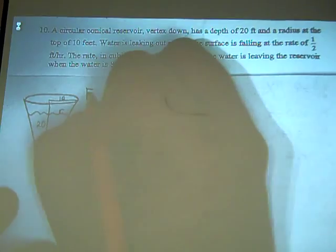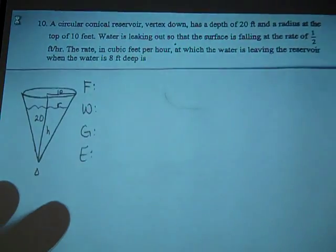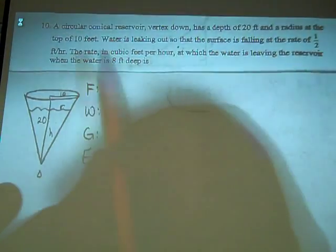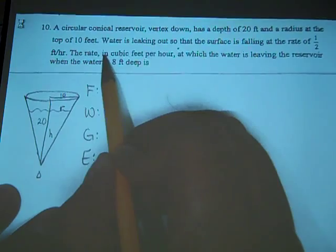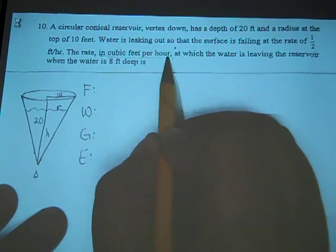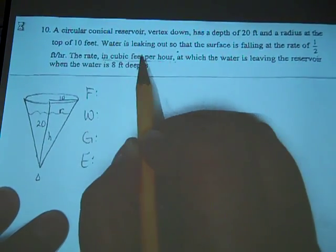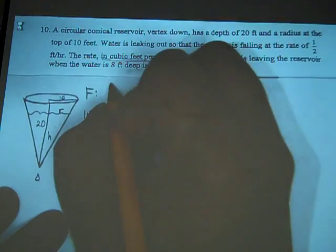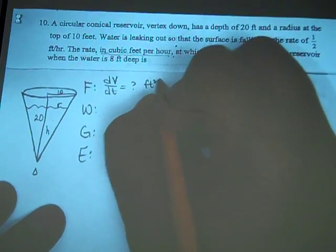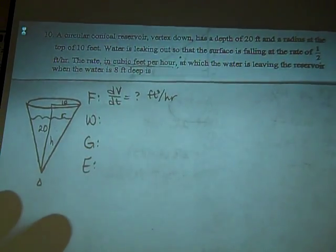So now I get to start reading the problem over and over again. I always start with what am I trying to find. Cubic feet per hour. So what do we now know we're looking for? Volume. Because volume is the only thing we know measured in cubic units. So we are looking for dV/dt, and we already know that it is cubic feet per hour.